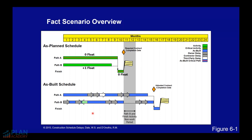So we have owner-responsible delays, contractor-responsible delays, third-party delays, and acceleration. On top of that, we have a weather calendar that affects path B and the finished path — neither of those two activities can take place during the winter months. Path A, given the nature of the activities, is able to execute the work even during the winter months.